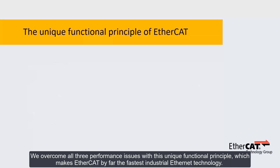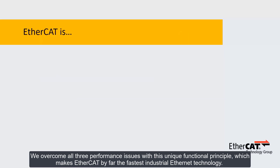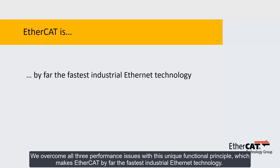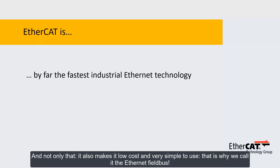We overcome all three performance issues with this unique functional principle, which makes EtherCAT by far the fastest industrial Ethernet technology. And not only that — it also makes it low-cost and very simple to use. That is why we call it the Ethernet Fieldbus.